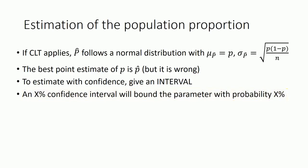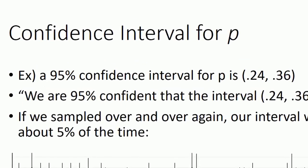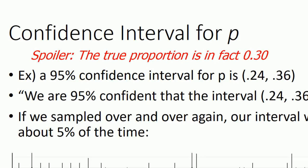So say we do a sample, we calculate a confidence interval for p, the proportion in the population, and the lower bound is 0.24 and the upper bound is 0.36. We would say that we're 95 percent confident that the interval 0.24 to 0.36 surrounds p, the proportion.